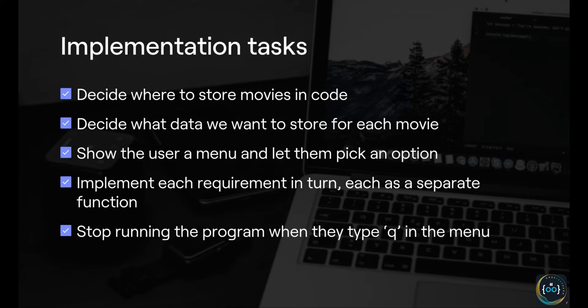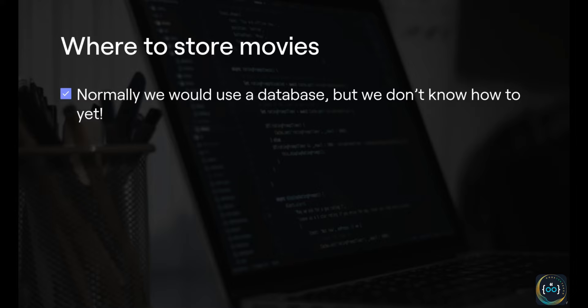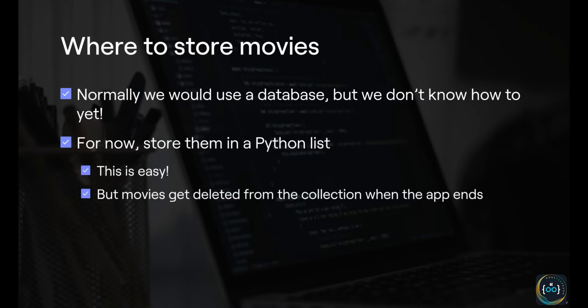We're going to store movies in a Python list. Putting things into a list is easy — you can use append to add things to a list and you can go over the list using a loop very easily. The problem is that movies get deleted from the collection when the app terminates, but that's a temporary compromise. Later on, when we learn more about databases, we will be able to overcome this. Our code essentially starts with a movies variable equal to an empty list.